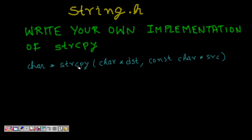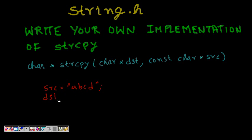strcpy is used for copying a string stored in source to the memory in destination. We want to copy string source to string destination. For example, if source is equal to 'a b c d', then destination should also have the same thing — 'a b c d'.